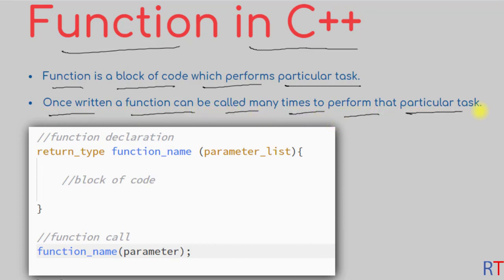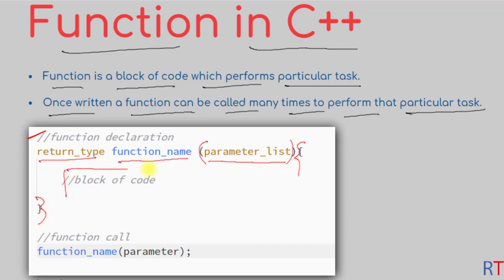The syntax of a function declaration is: first you have the return type, then the function name, and inside the parentheses we pass the parameters, and then inside the curly braces we write the block of code.